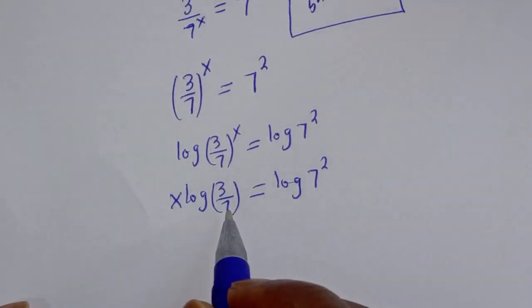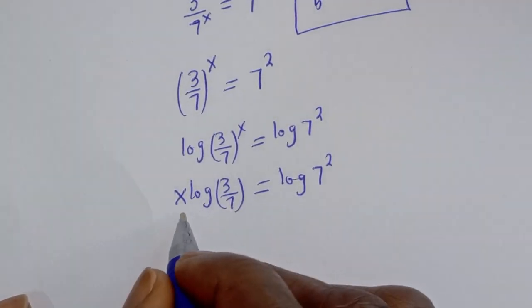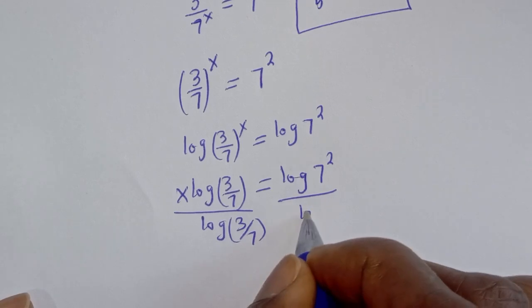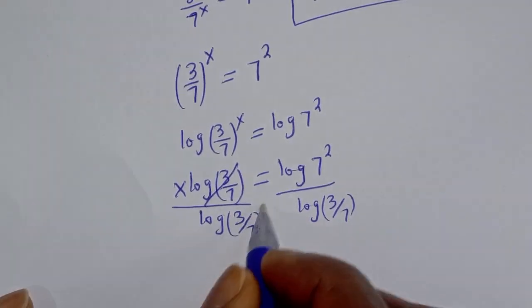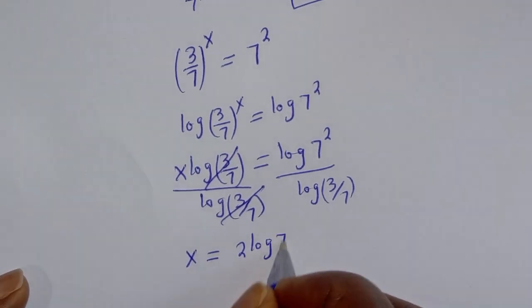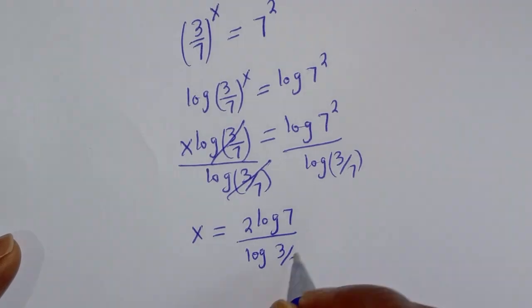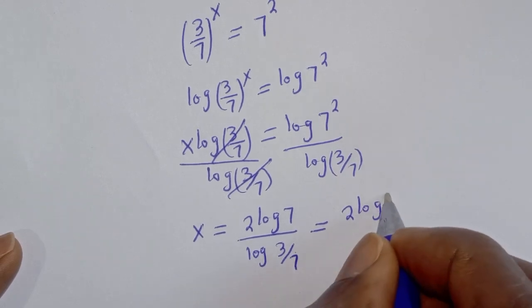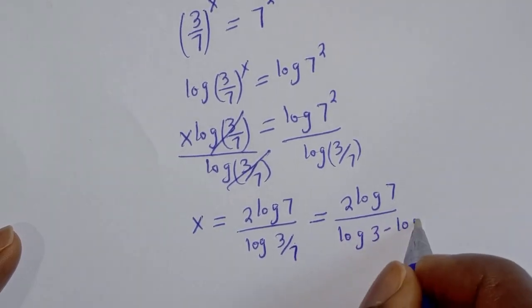Then we are looking for the value of s. Let's divide both sides by log 3 over 7. This will cancel, so s is equal to 2 log 7 over log 3 over 7. And this can be written as 2 log 7 over log 3 minus log 7.